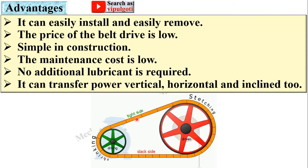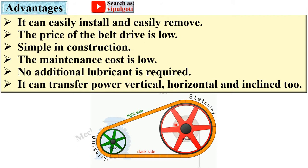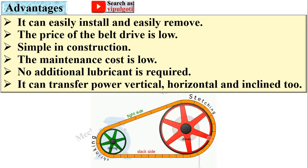In case of belt drive, no lubrication is required between the belt and pulley. It can transfer power vertically, horizontally, and inclined also. That means if the shafts are in vertical, horizontal, or inclined positions to each other, you can transmit power with the help of the belt drive.